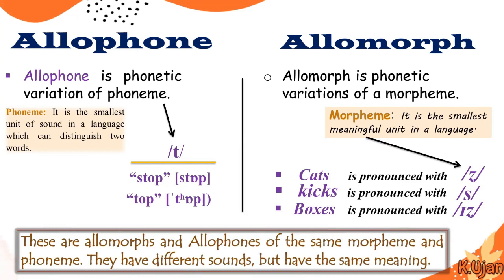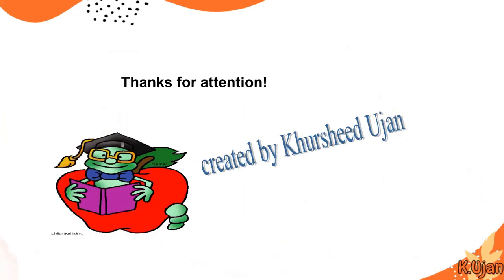Allophones and allomorphs of the same phoneme and morpheme have different sounds but the same meaning. The difference between allophones is a phonetic variation of the phoneme; however, there is no difference in the meaning of the words with that variation in pronunciation. Thanks for your attention. Hopefully this has been very helpful for all of you. Thank you very much.